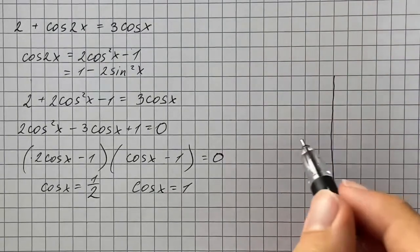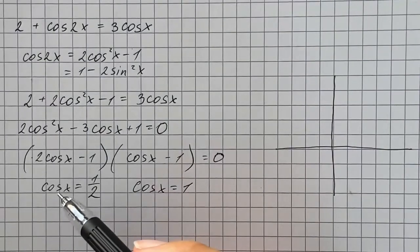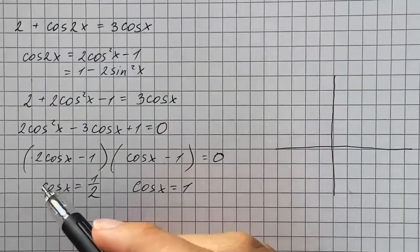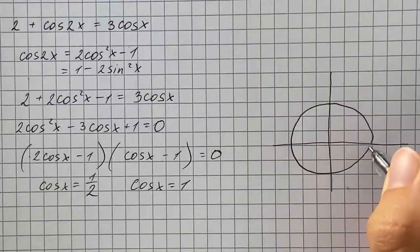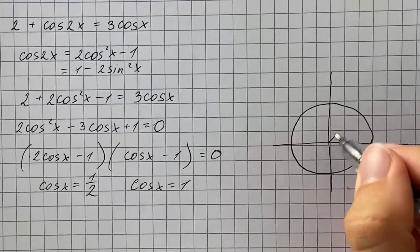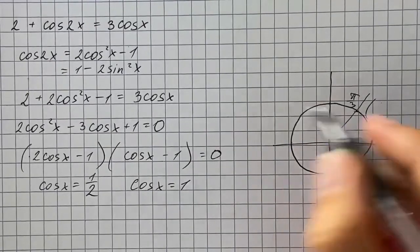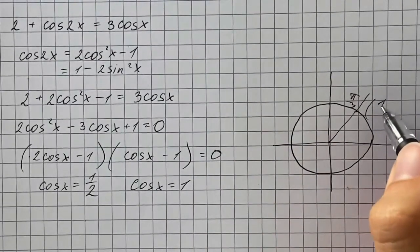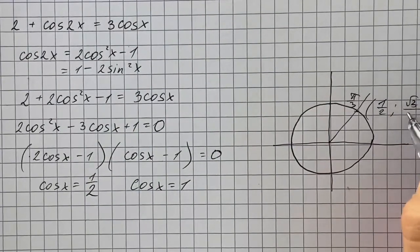So make a unit circle. Cosine represents the x coordinate. So that's going to be angle pi over 3, which has x coordinate 1 half and y coordinate square root of 3 over 2. So that's going to be our first answer.